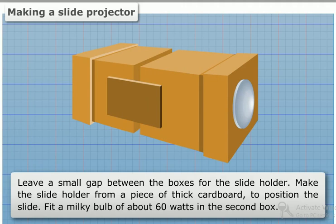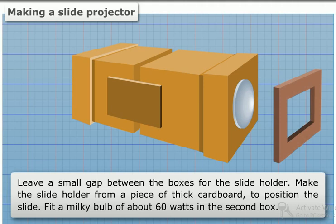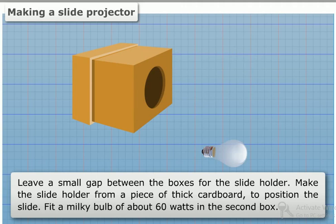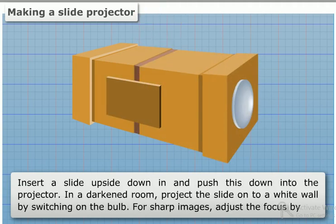Make the slide holder from a piece of thick cardboard to position the slide. Install a milky bulb of 60 watts in the second box. Insert a slide upside down and push this down into the projector.